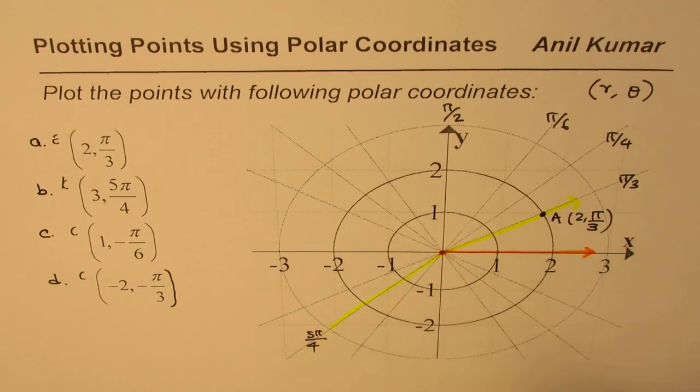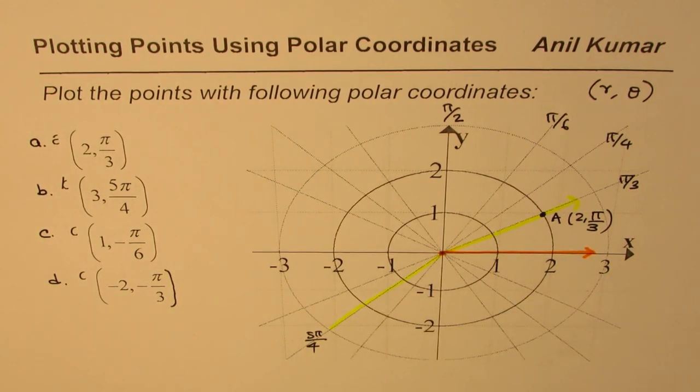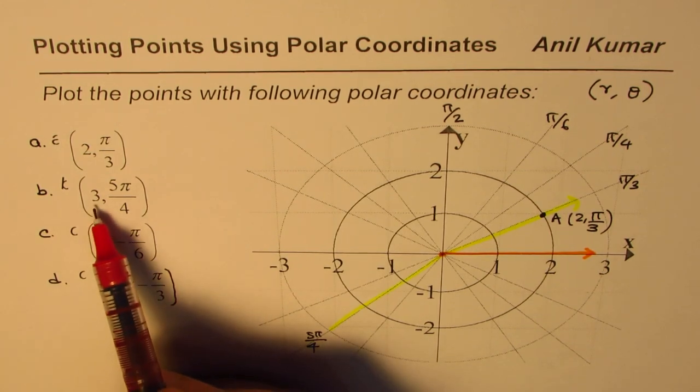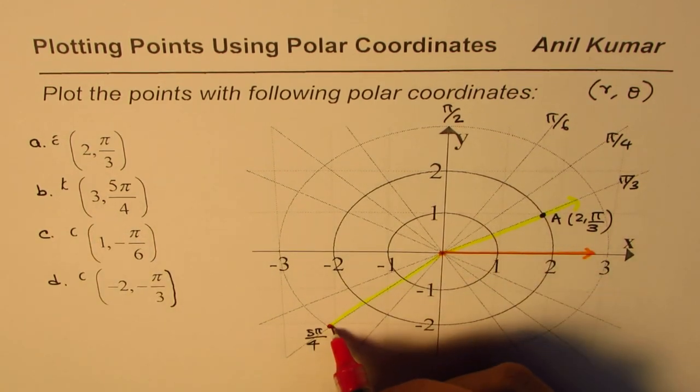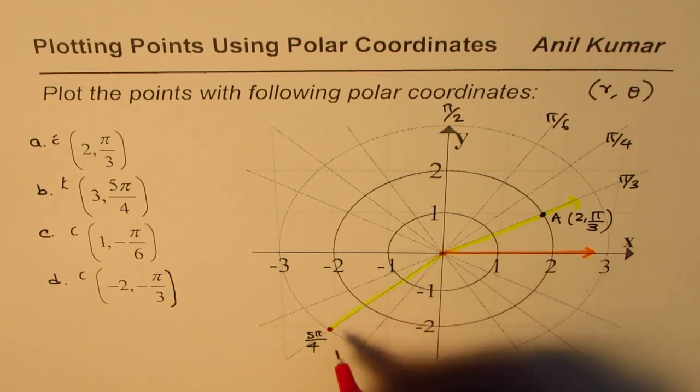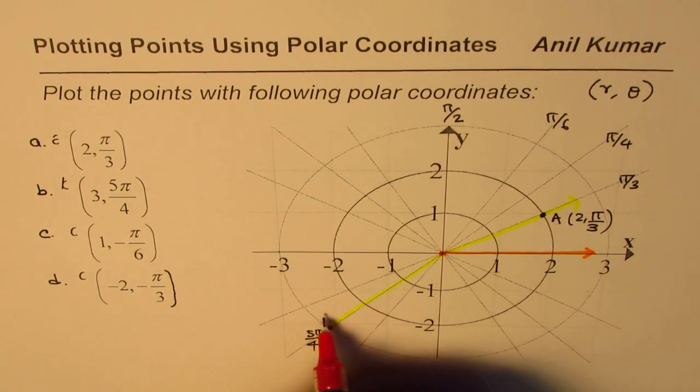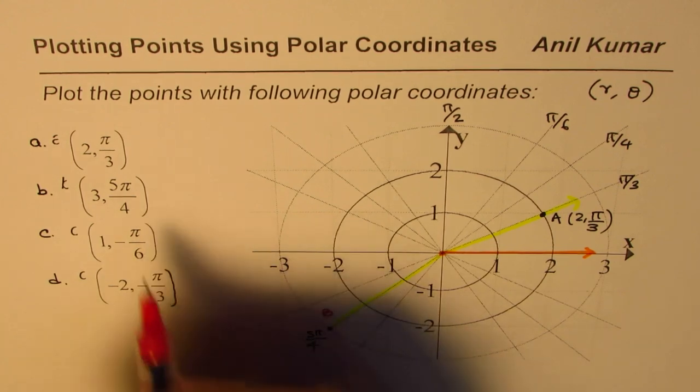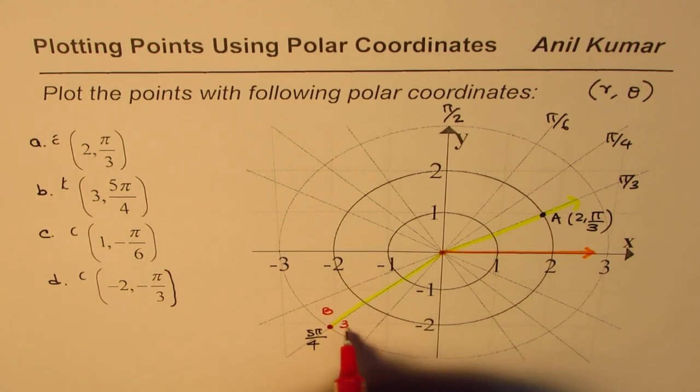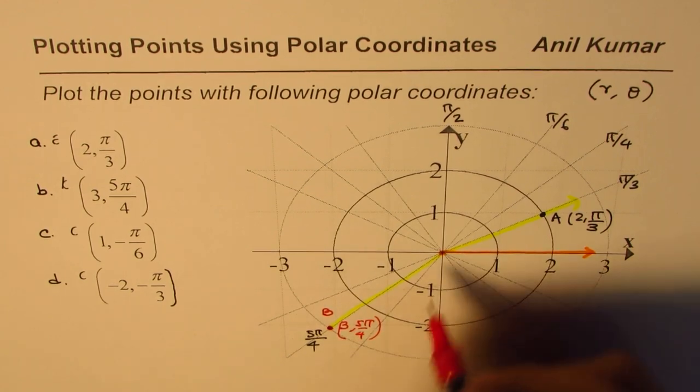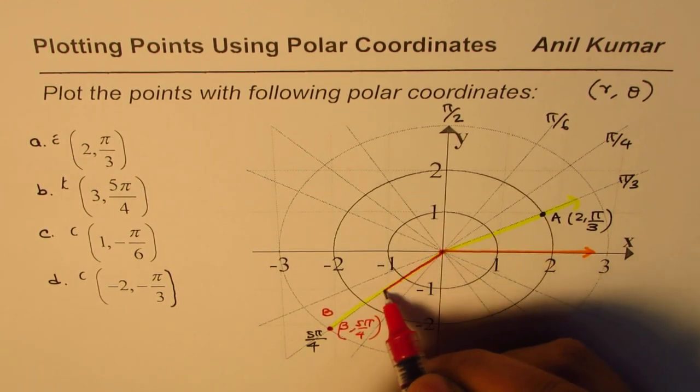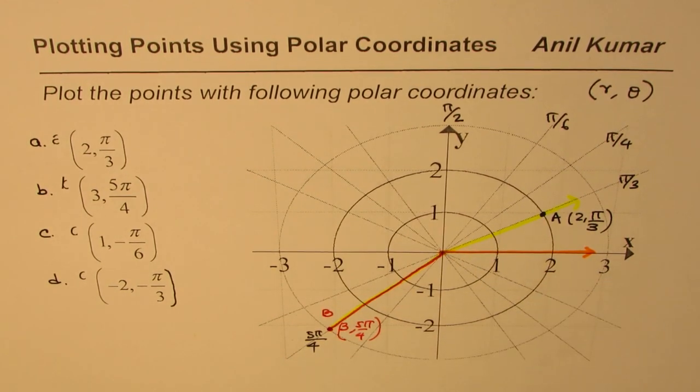And the point is three units away from the pole, so that means here. So that is the point for us. So this is the point B which is (3, 5π/4). You can always join it with the line segment to show the point. Let me join the first one also.